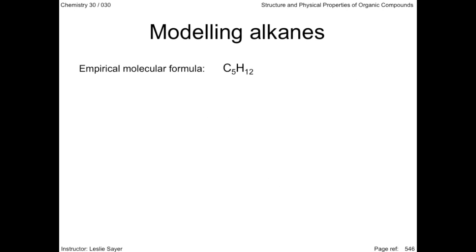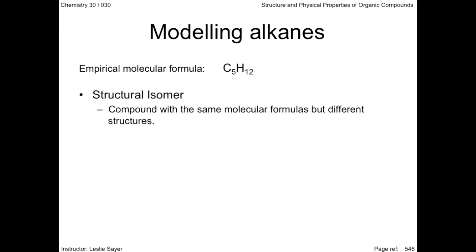Empirical molecular formulas do have limitations. For example, the formula for pentane is indeed C₅H₁₂. But is C₅H₁₂ always the formula for pentane? All the formula shows us is that there are five carbon atoms and 12 hydrogen atoms. If we assume all five carbons are in a row, then we do indeed have pentane. But the same formula can be written for different structures altogether. We call these different structures with the same molecular formula structural isomers.